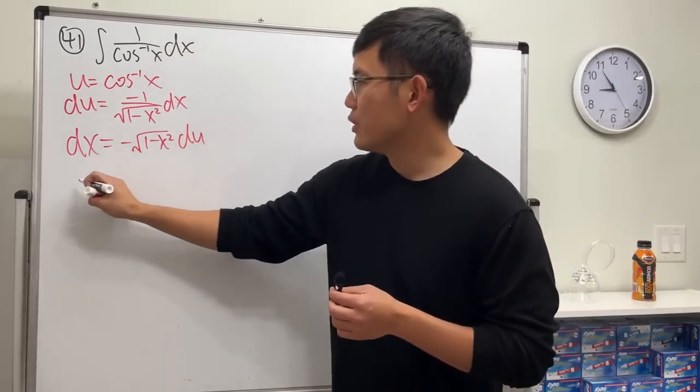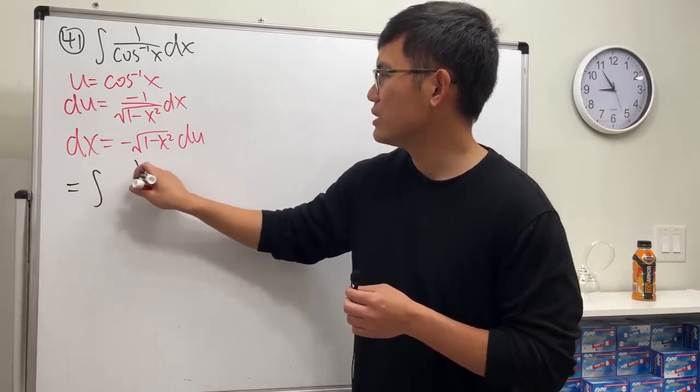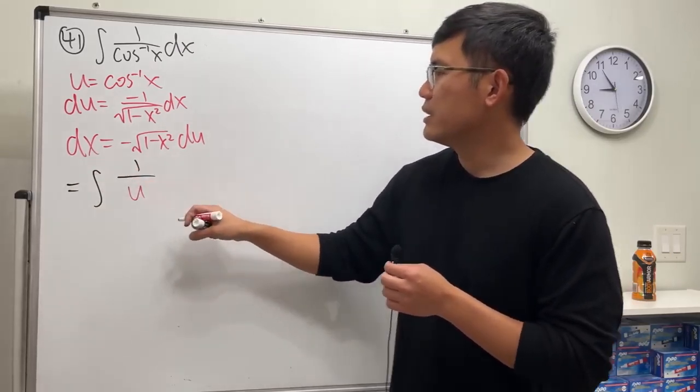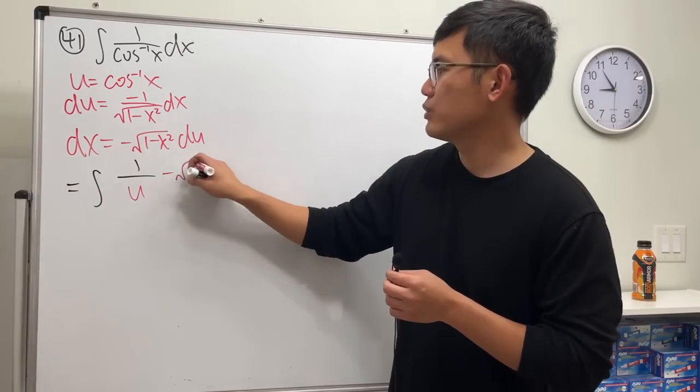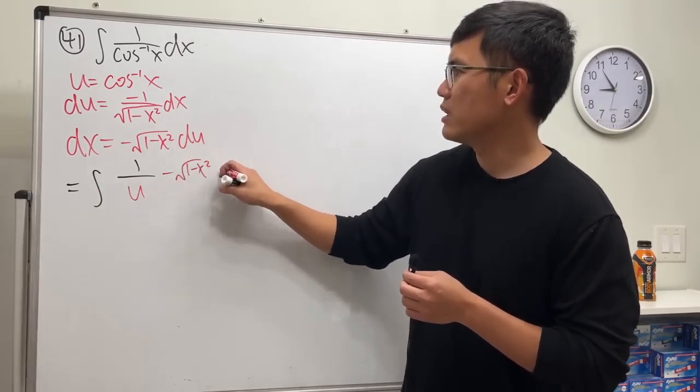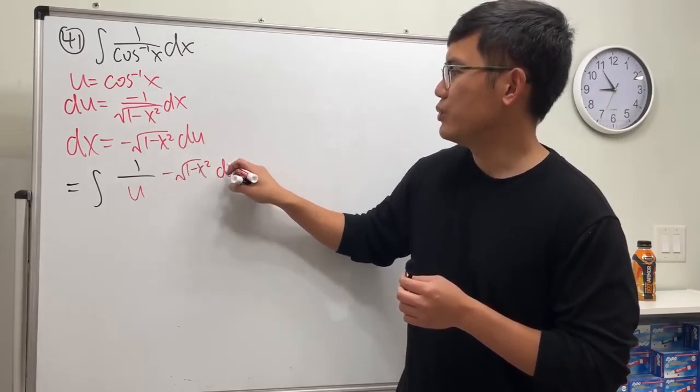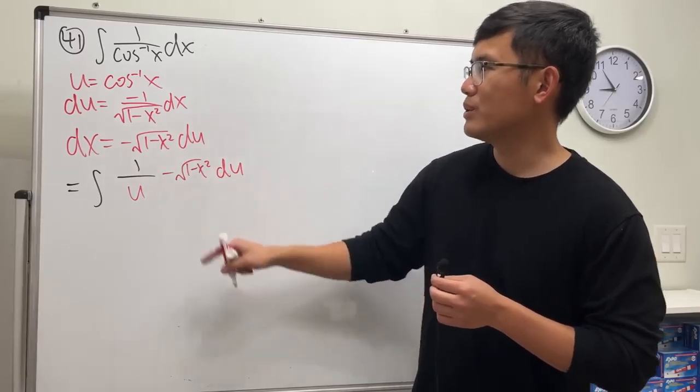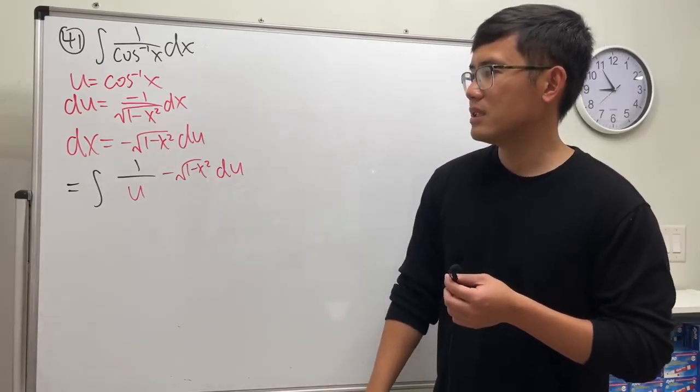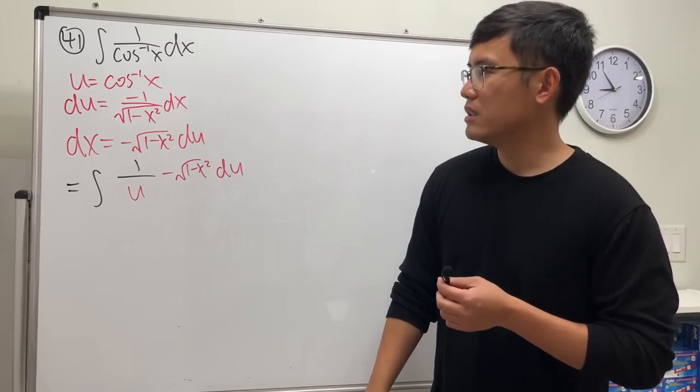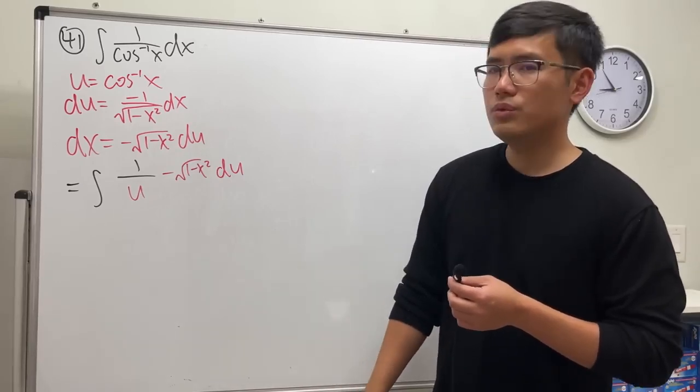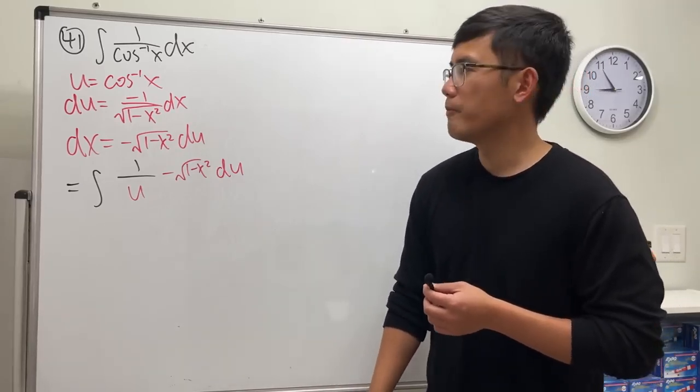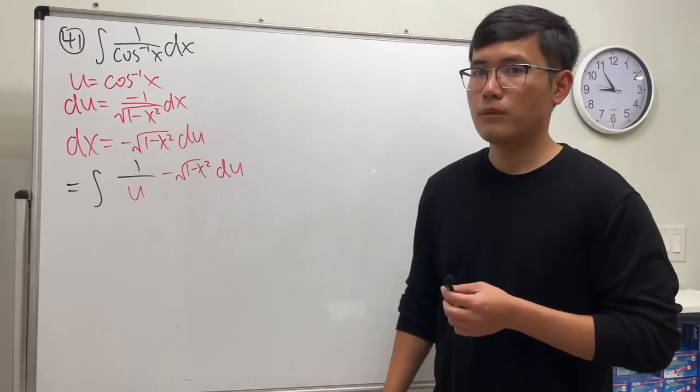We put it there. We get integral 1 over u. Then dx is negative square root of 1 minus x squared du. Wow, how do we deal with this? Can we continue or should we stop? What do you think?